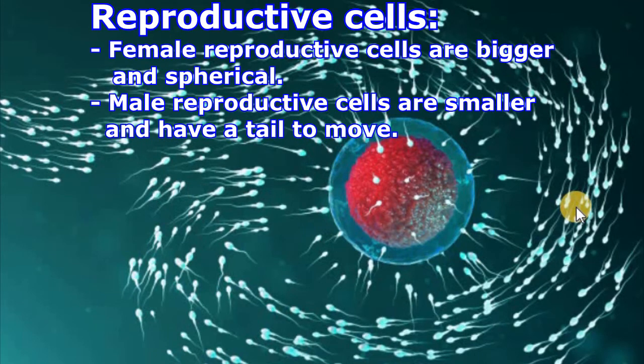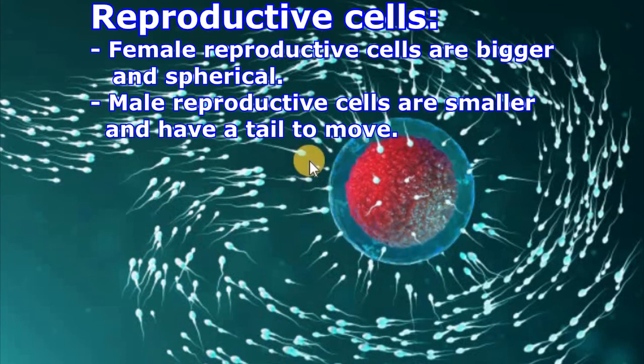And finally, reproductive cells, which are necessary for living things to reproduce. The big one is the female reproductive cell, and the small ones are male reproductive cells. This is something we will study next year in depth. Those are three types of cells we can find in animals and obviously in humans.